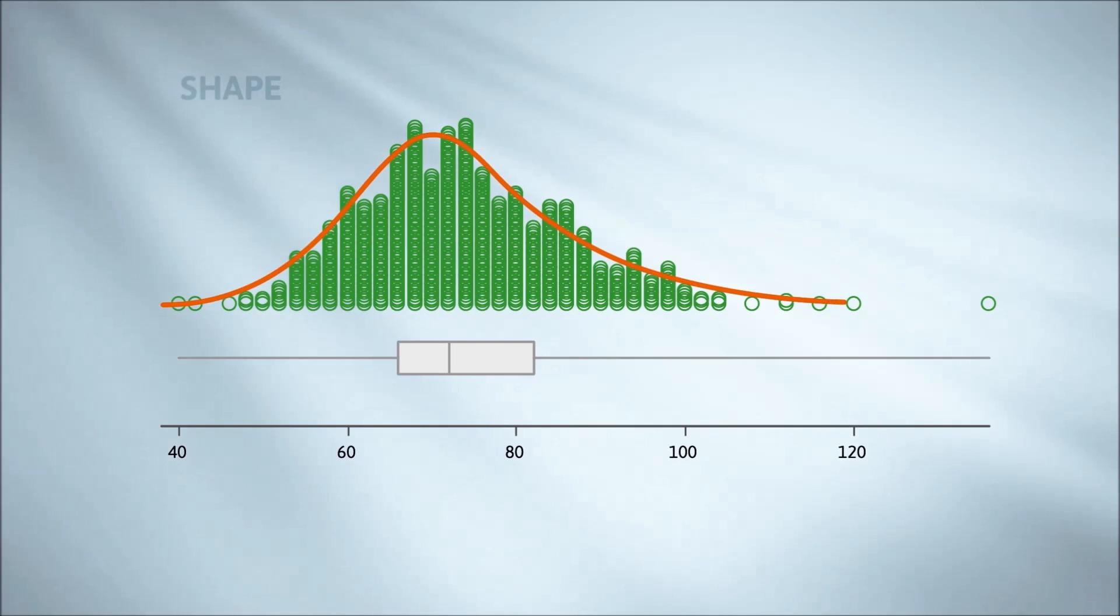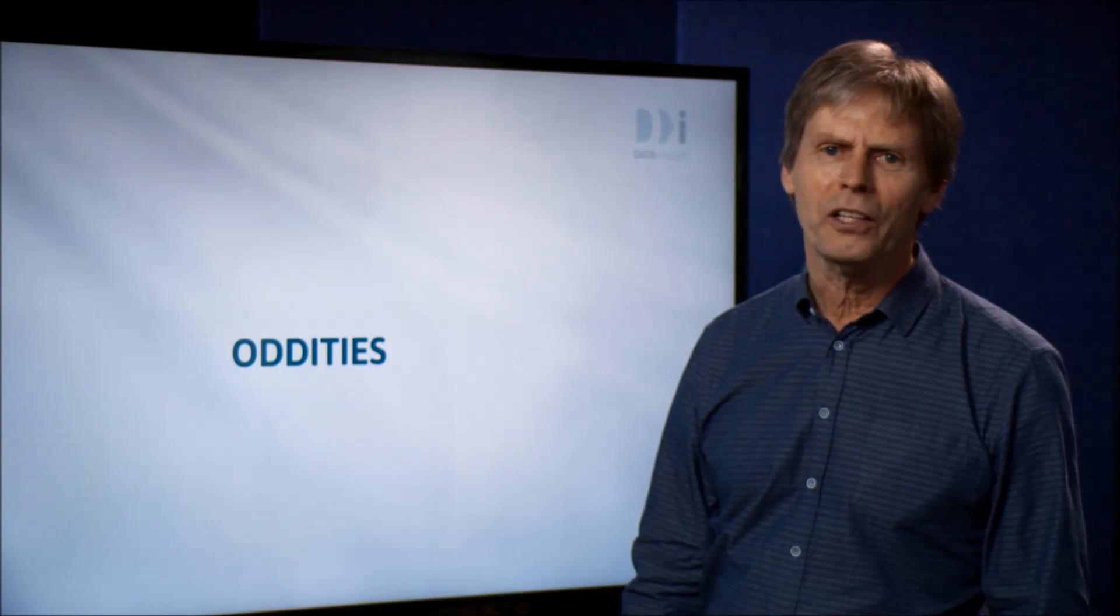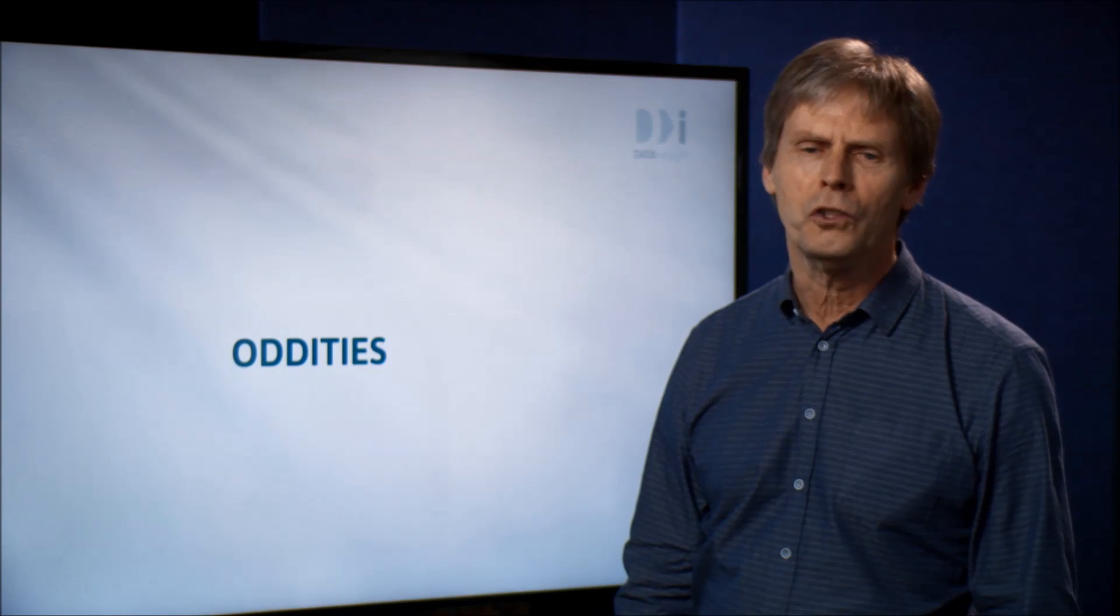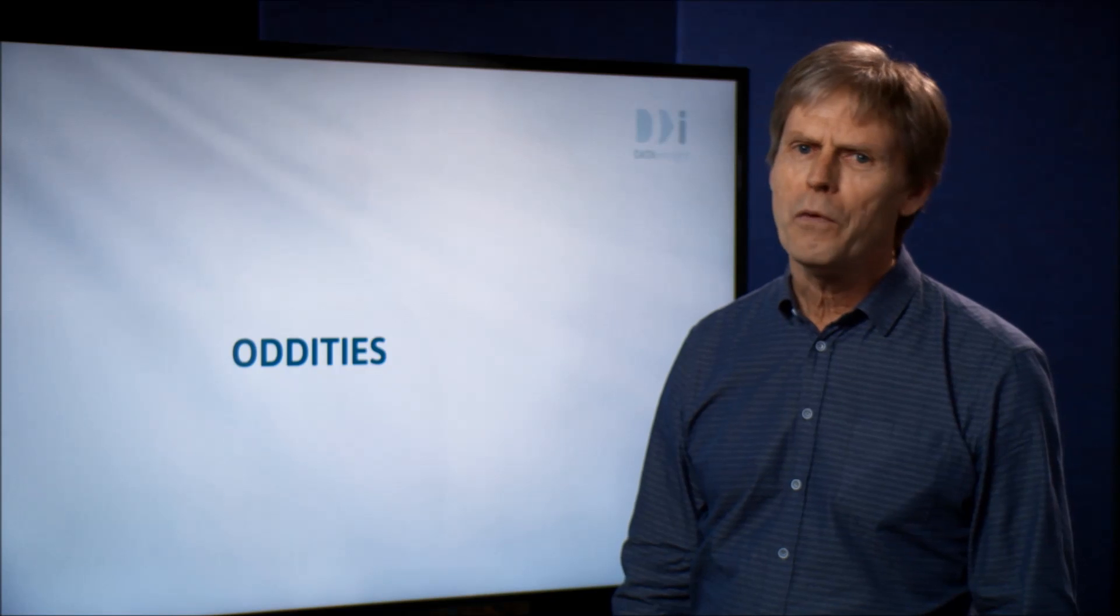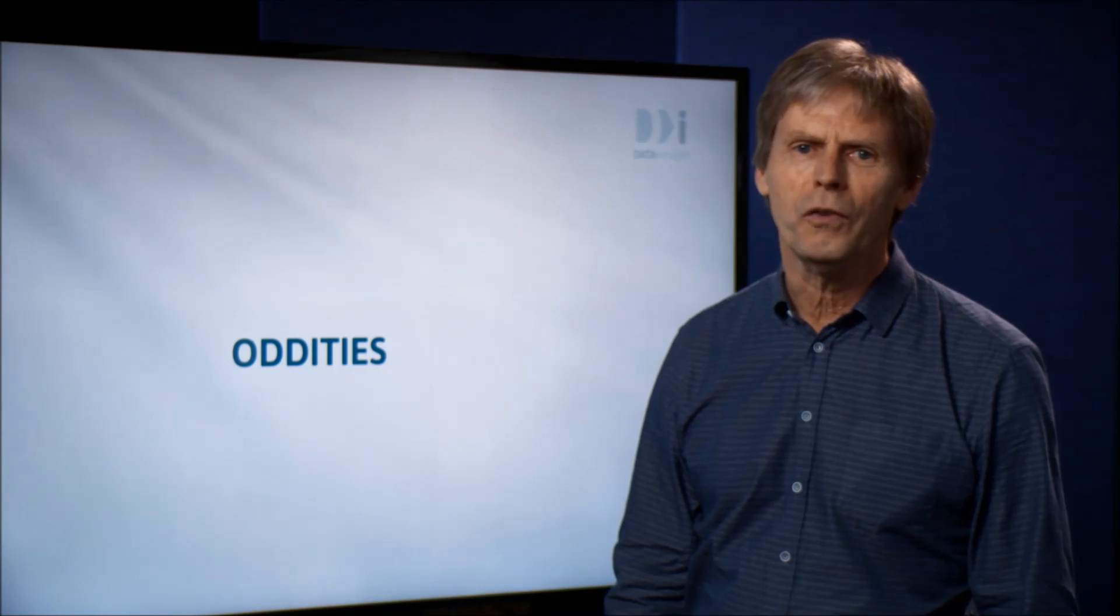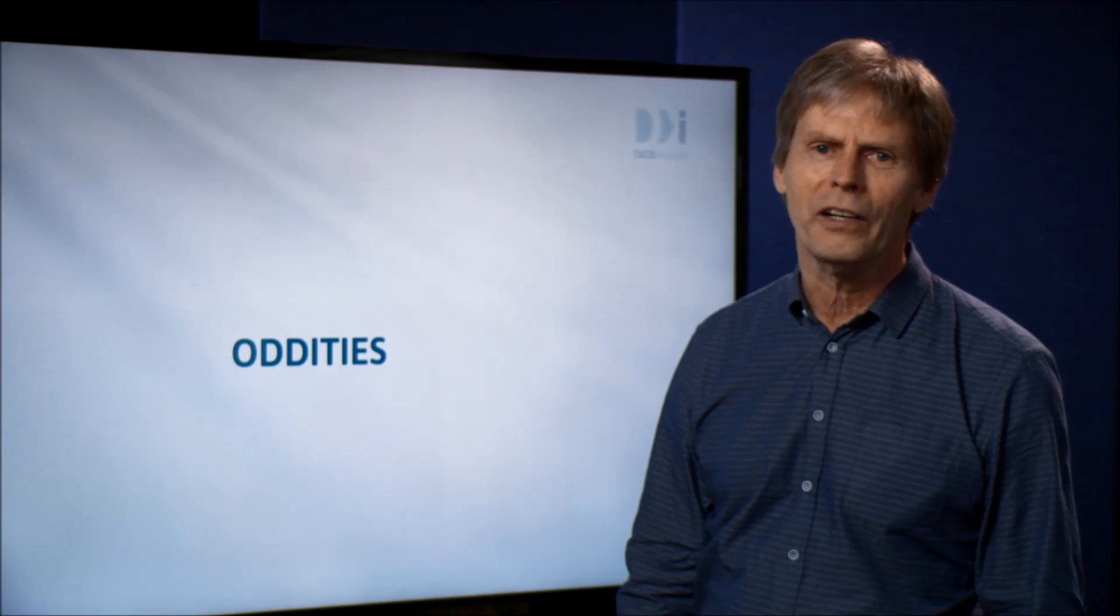The shape is a fairly symmetrical mountain shape. Last in our list of features is oddities. By oddities, we just mean anything that looks strange or odd. Although we've come to this last, these are often the first things that pop out at us when we look at a graph.